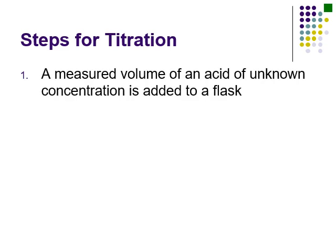Steps for a titration: take a measured volume of an acid of unknown concentration — you must have a measured volume — and add it to a flask. It's very common to have the acid in the flask. Then add the indicator, like phenolphthalein, which is colorless in acidic solutions, so the flask should be colorless at this point.